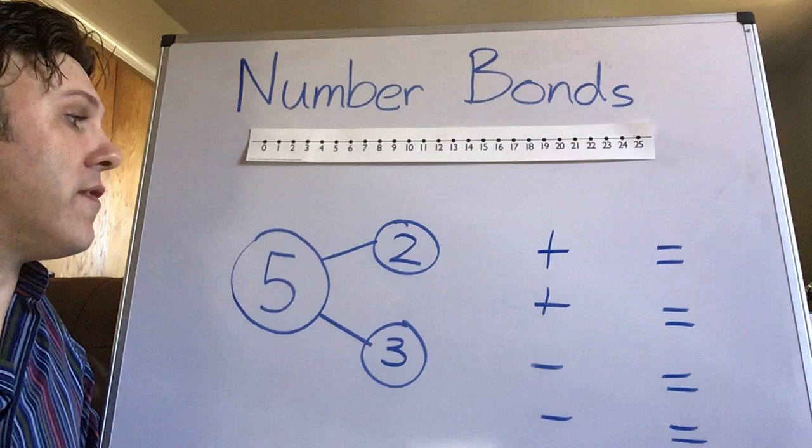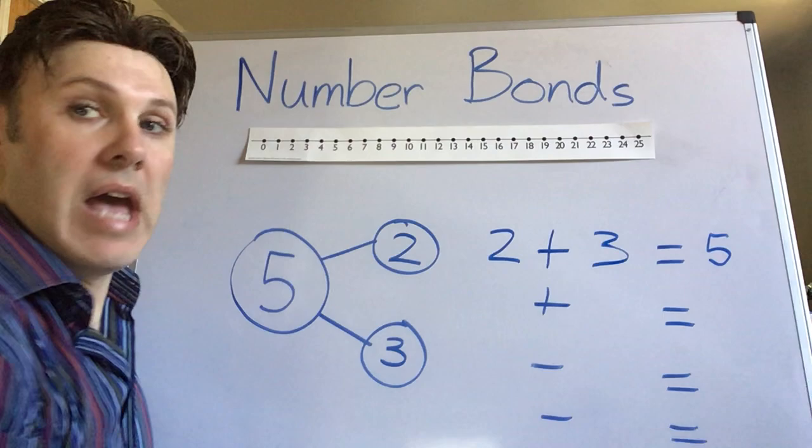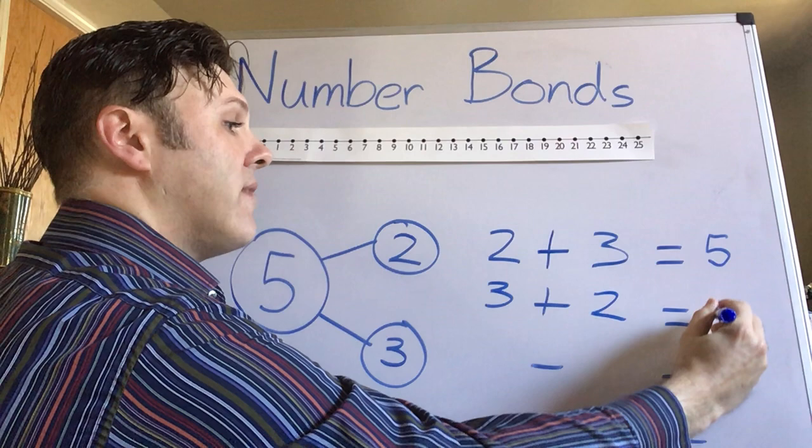So for the addition I know that I'm going to use my two smaller numbers. So I will know that two plus three equals five as well as three plus two equals five.